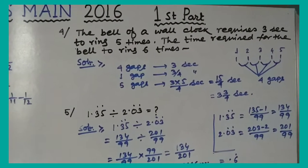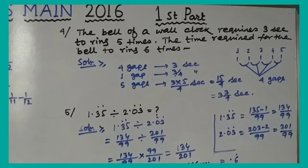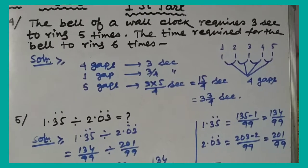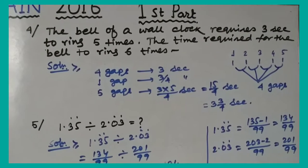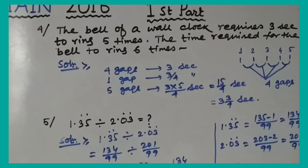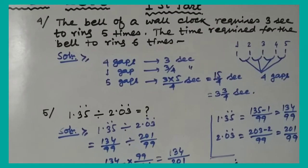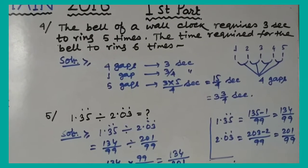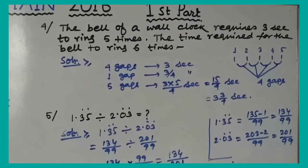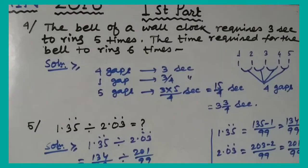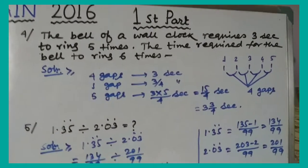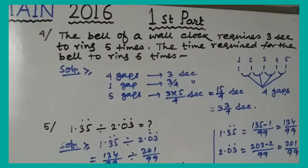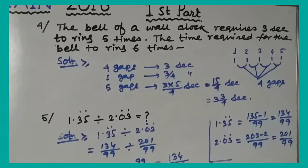Question number 4: The bell of a wall clock requires 3 seconds to ring 5 times. Find the time required for the bell to ring 6 times. When ringing 5 times there are 4 gaps, so each gap = 3/4 seconds. For 6 rings there are 5 gaps: 5 × (3/4) = 15/4 = 3 and 3/4 seconds.